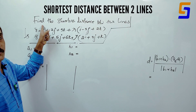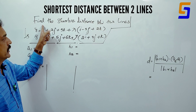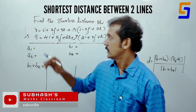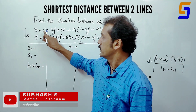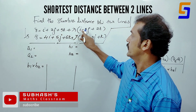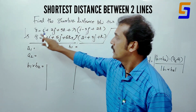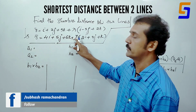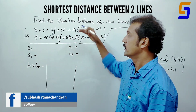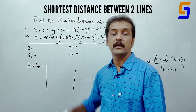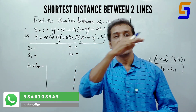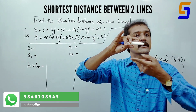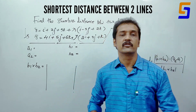Question L. Find the shortest distance between two lines. R is equal to i plus 2j plus 3k plus lambda into i minus 3j plus 2k. And R is equal to 4i plus 5j plus 6k plus mu into 2i plus 3j plus k.